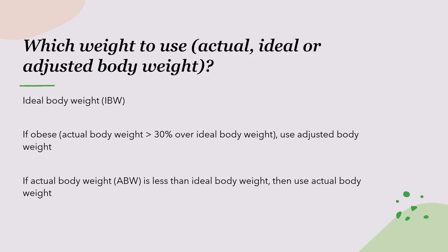I'll now show you the equation to calculate ideal body weight, how to determine if a patient is obese — meaning how to determine if the actual body weight is greater than 30% over the ideal body weight — and then the equation to calculate the adjusted body weight, which you then use in the Cockcroft-Gault equation to calculate the creatinine clearance.